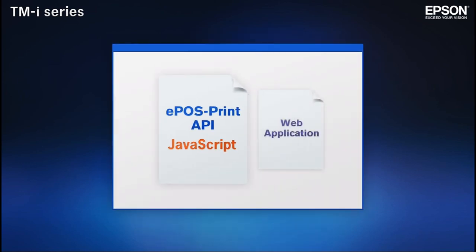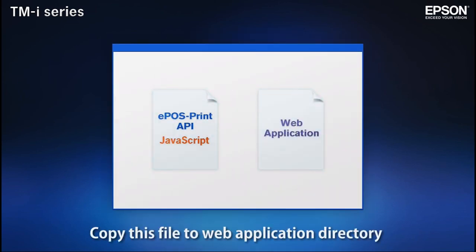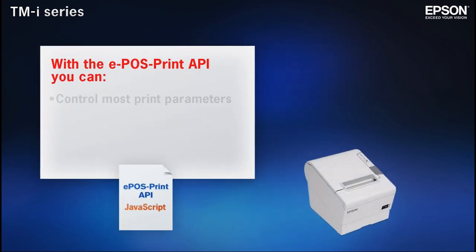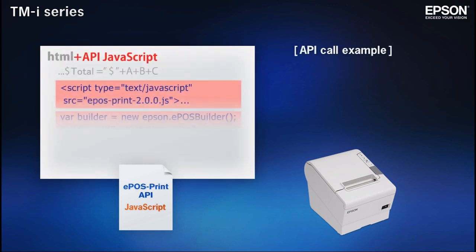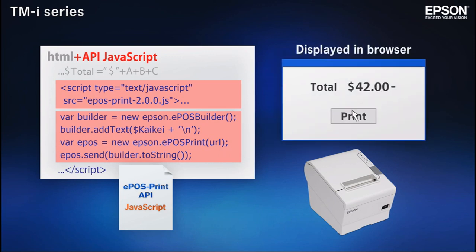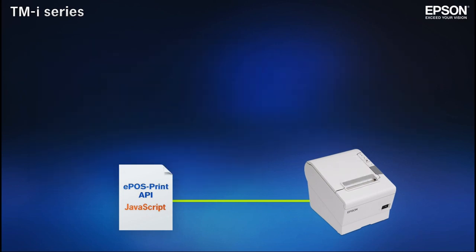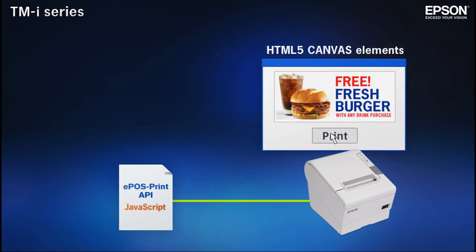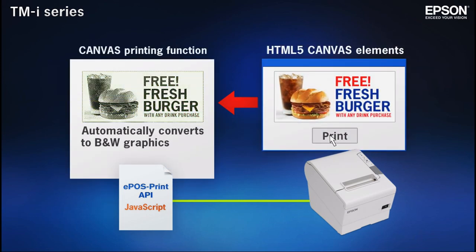Our JavaScript ePOS Print API makes it possible to check printer status and control a wide range of print parameters. Simply follow the instructions in the manual to invoke the JavaScript and enable your application to send XML data. The API's Canvas printing function automatically converts HTML5 Canvas elements to black and white graphics before sending them to the printer, so you can even include browser fonts and handwritten text in your printed receipts.